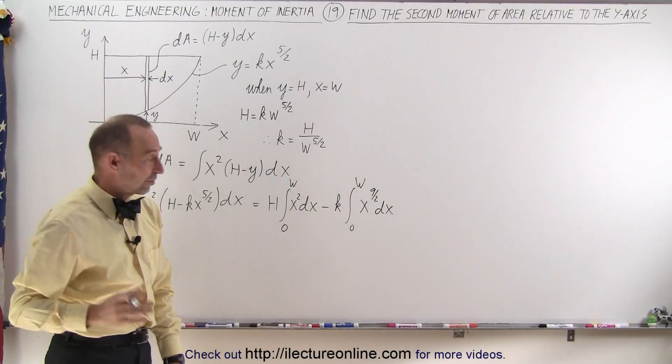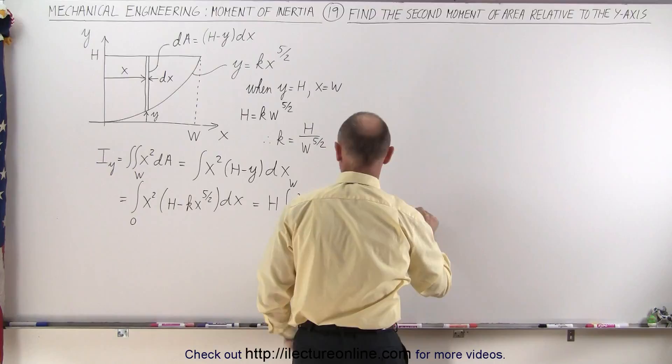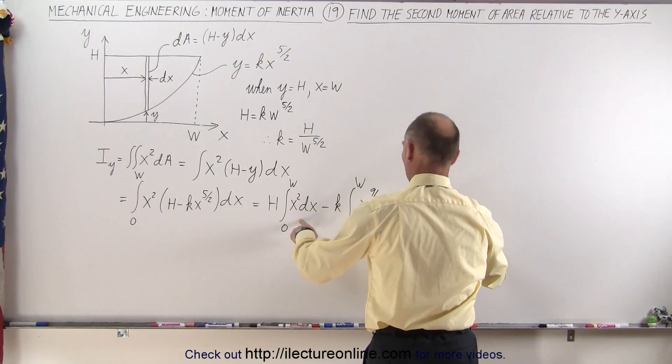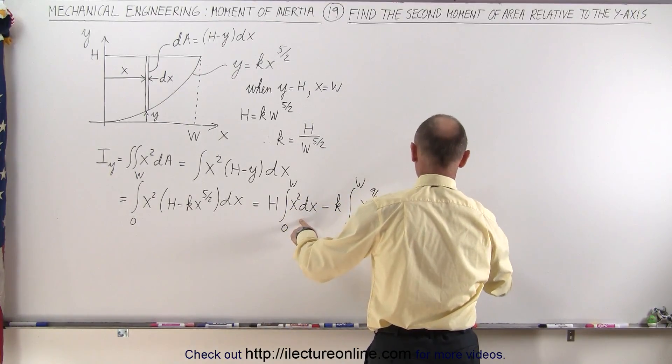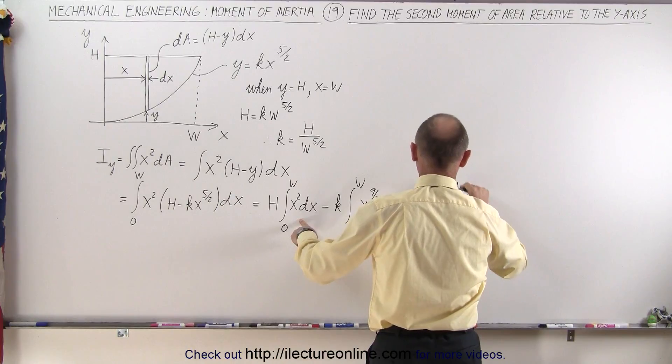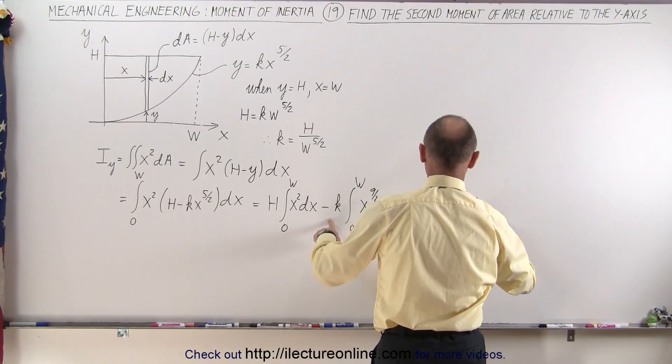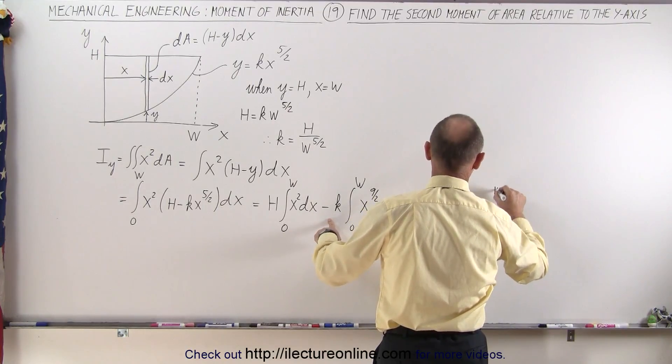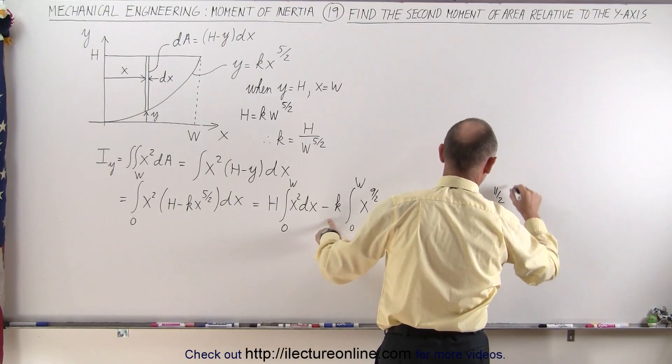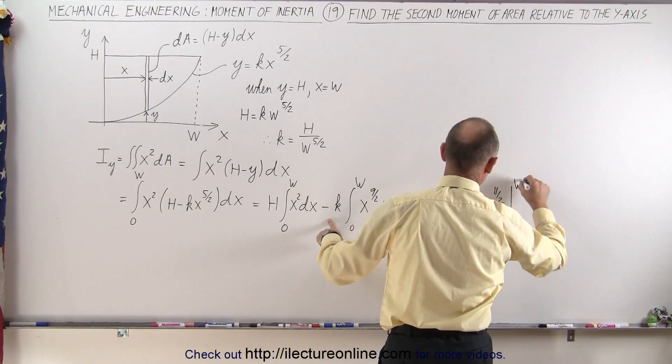Alright, let's integrate those and see what we get. This is equal to hx cubed over 3, evaluated from 0 to w, minus kx to the 11 halves, divided by 11 halves, evaluated from 0 to w.